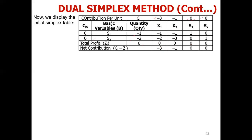After that, we calculate CJ minus ZJ: simply CJ minus the corresponding ZJ for each column. Looking at the result, CJ minus ZJ is less than or equal to zero, so the optimality condition is fulfilled. But the BI values — the right-hand side quantities — are less than or equal to zero, meaning the feasibility condition is not met.